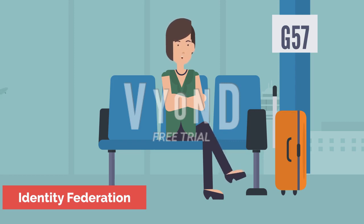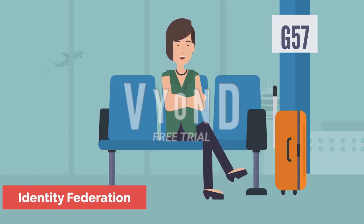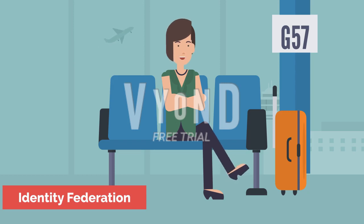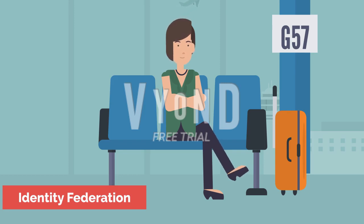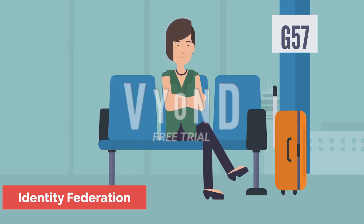To create a SAML provider, the process is slightly different. From within the IAM console, select Identity Providers; click Create Provider; select SAML; enter a name for the identity provider; point to the SAML metadata document, which includes information such as the issuer's name, expiration date, and security keys; verify the information and click Create. This concludes the discussion on federation.